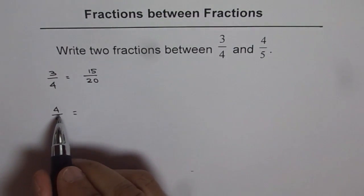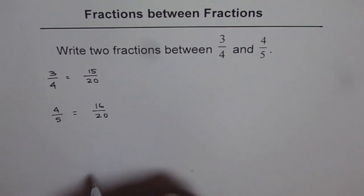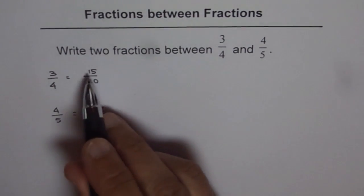For the next one, we can multiply by 4, which gives 16/20. Now we have a common denominator of 20. We need to find fractions between them.